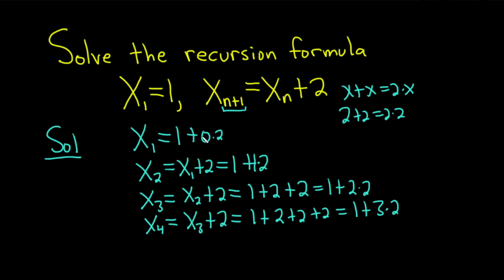So we have X sub 1 is 1 plus 0 times 2, X sub 2 is 1 plus 1 times 2, X sub 3 is 1 plus 2 times 2, X sub 4 is 1 plus 3 times 2. So you'll notice now that this is always 1 less. Let me use a different color here to indicate that. So the 0 is 1 less than 1, this 1 is 1 less than 2, this 2 is 1 less than 3, this 3 is 1 less than 4.